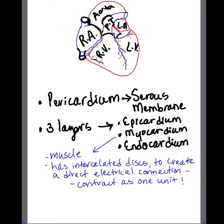An overview of the cardiovascular system, specifically of the heart: the heart is about the size of a clenched fist and it consists of four chambers — the right atrium, right ventricle, and on the left side a left atrium and a left ventricle. The heart also pumps blood into two circuits: a pulmonary and a systemic system.